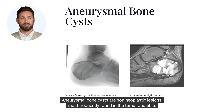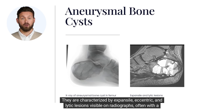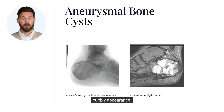Aneurysmal bone cysts are non-neoplastic lesions, most frequently found in the femur and tibia. They are characterized by expansile, eccentric, and lytic lesions visible on radiographs, often with a bubbly appearance.